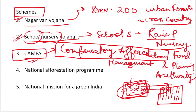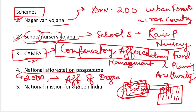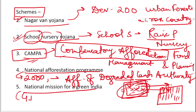The next theme is the National Afforestation Programme, which came in 2000, and its aim was to do afforestation of degraded lands. Another important theme is the National Mission for Green India, also called the Green India Mission, which was launched in 2014. Its aim was also to do afforestation in areas that have faced deforestation overall, and to make India greener through plantation in urban and other areas.